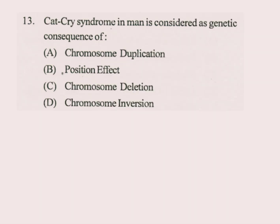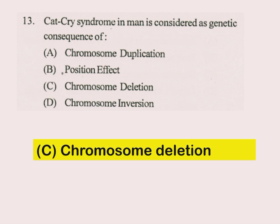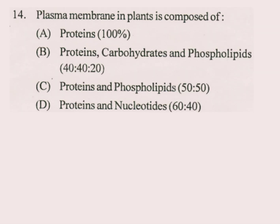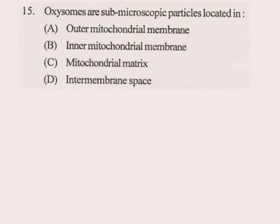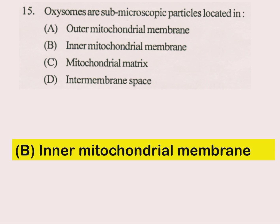Question number 13. Cri-du-chat syndrome in man is considered as a genetic consequence of? The answer is chromosome deletion. Question number 14. Plasma membrane in plants is composed of? The answer is C part: proteins and phospholipids are present in the ratio of 50 and 50. Question number 15. Oxysomes are sub-microscopic particles located in? The answer is B part: inner mitochondrial membrane.